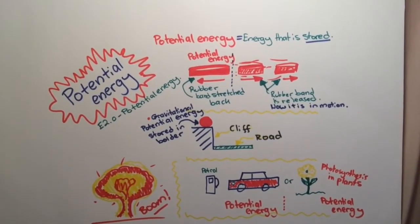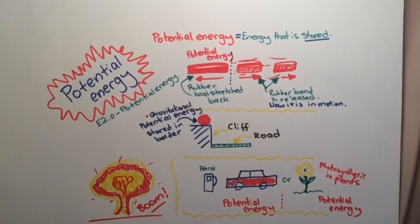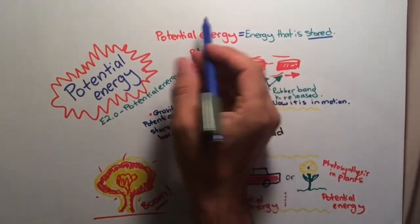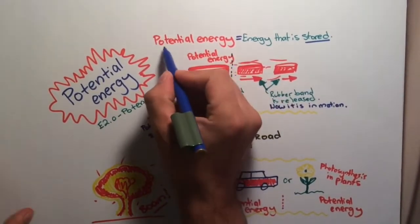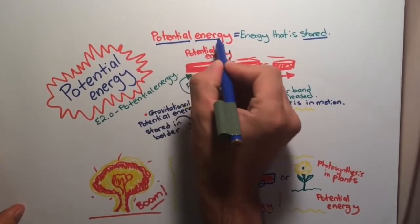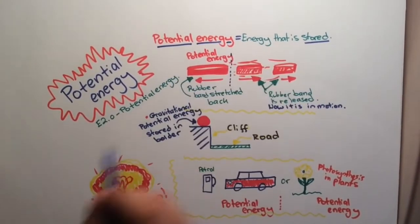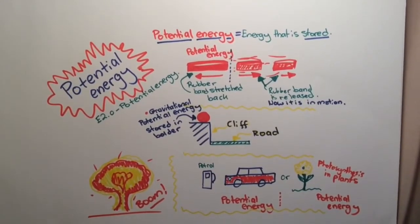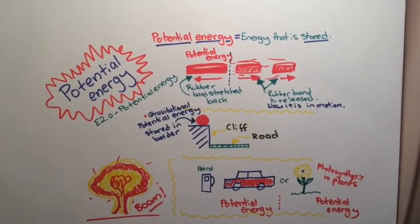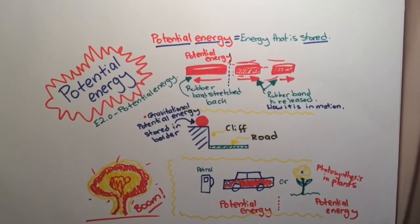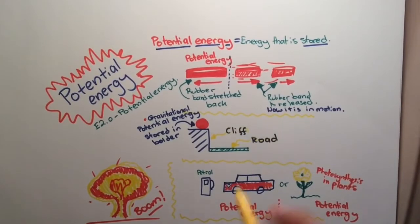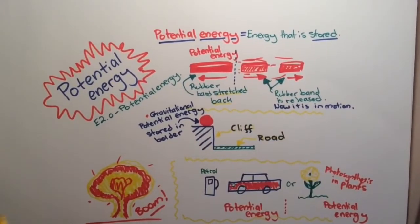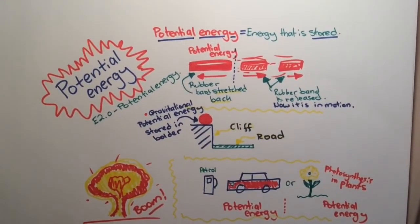So remember, potential energy essentially is energy which is stored. Here is an example of this. Think of an elastic band that's been pulled back — it has energy stored in the elastic band that will be released if it was to let go. So this is called elastic potential energy.